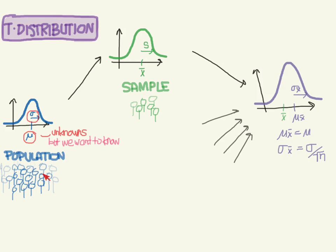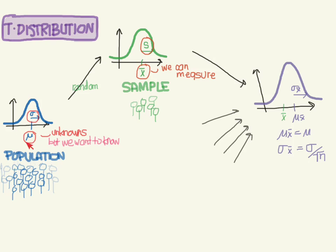These are things that we want to know. So what we do is we take a random sample of people — a smaller group that is much more manageable. In this random sample, we also get a distribution, and since it's a much smaller number, we get a sample mean and a sample standard deviation, and these we can measure. So we use these to estimate the population parameters, but we know this is a random sample, and we may have picked all our people from one area or another, so we're not sure how good this estimate is.